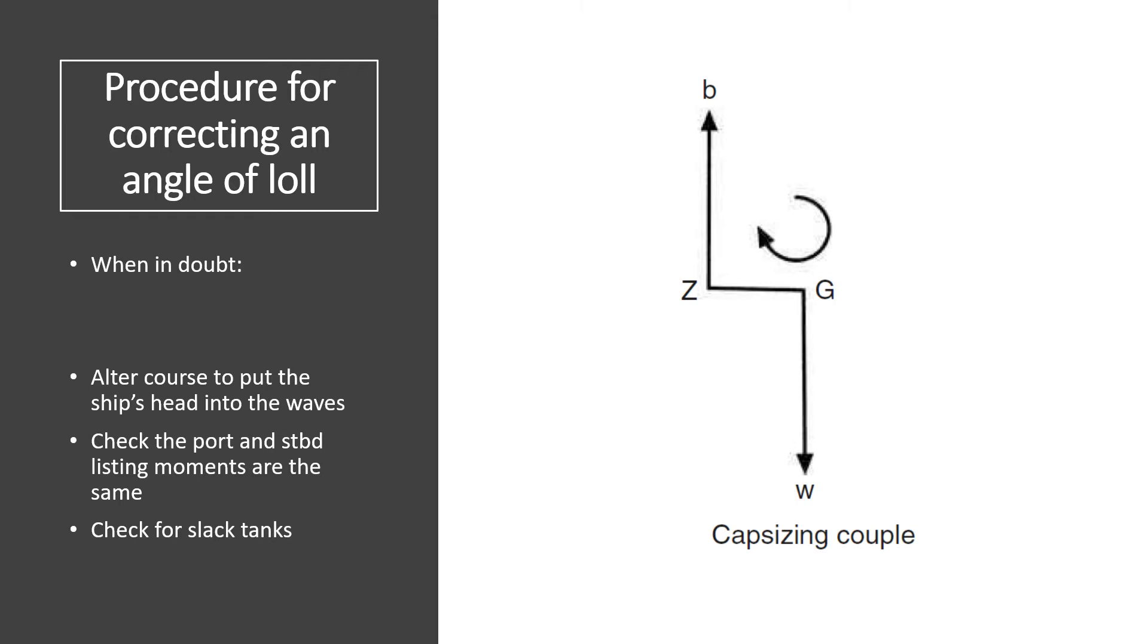The second thing you should be checking is making sure that the port and starboard listing moments are the same. Verify the tank soundings and check for cargo shift, because it's possible to account for any listing moment that may cause the ship to be in a listed situation. If such calculations are made and there is no net listing moment, a case of instability may be assumed and the ship will be lying at an angle of loll. Make sure you recalculate the ship's effective KG and verify the ship's GM. Check for slack tanks. This is the third step. Ideally, chief officers don't like to have slack tanks, but sometimes it is unavoidable, especially if you have to maintain a certain draft.